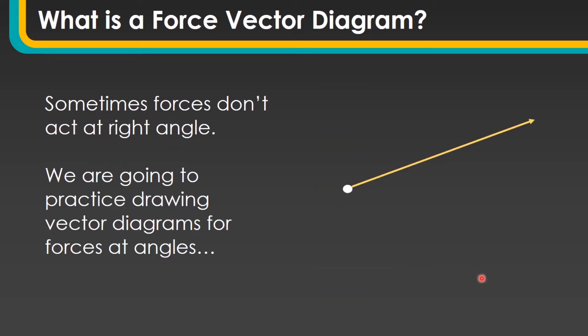However, sometimes forces don't act at right angles like the first example we looked at. So we're going to practise drawing some vector diagrams for forces at different angles other than 90 degrees to the horizontal.